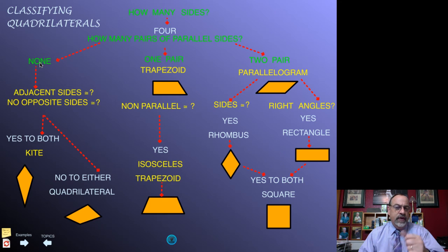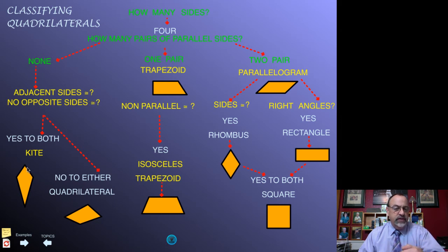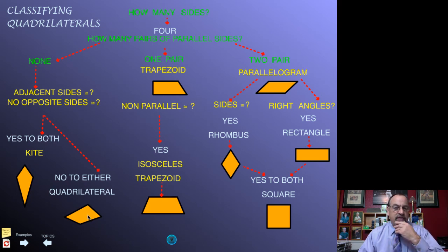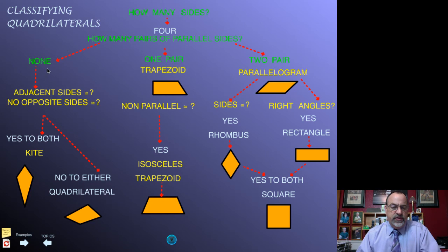If none of the pairs of opposite sides are parallel, we then need to ask: are the adjacent sides congruent, and are the opposite sides not congruent? If you answer yes to both — the adjacent sides are congruent and the opposite sides are not congruent — then you classify it as a kite. If the answer to either one of these is no, then you simply have a quadrilateral. That's the most specific name for that particular four-sided figure.